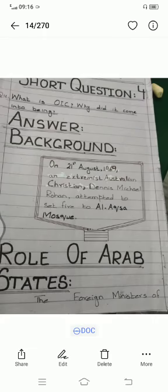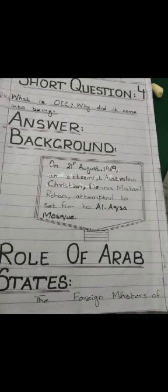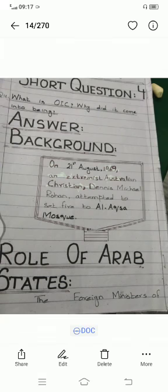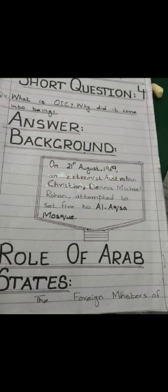The next important question is: what is OIC and why did it come into being? First is the background. On 21st August 1969, an extremist Australian Christian attempted to set fire to Al-Aqsa Mosque. The name of that Australian Christian was Dainese Mikhail Rohan. In classroom and online lectures, we have already discussed different historical events of Al-Aqsa Mosque, so you can write that material as well.